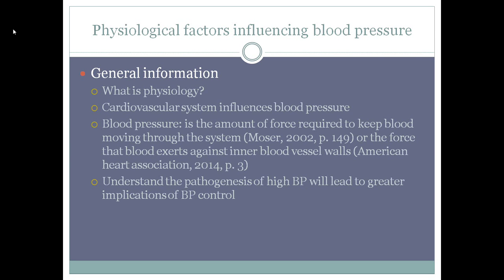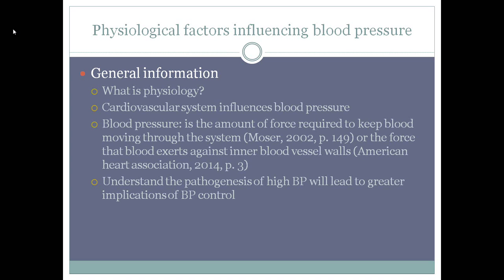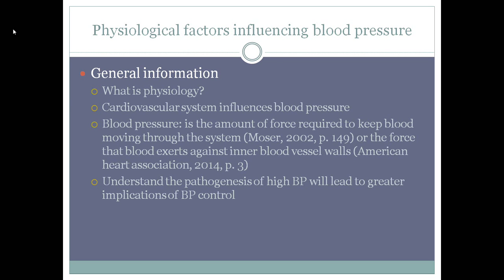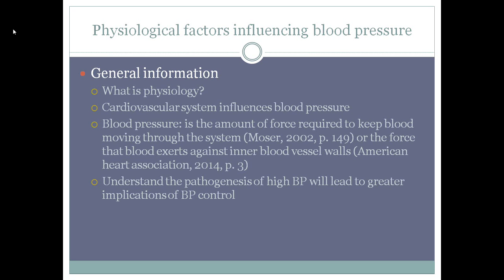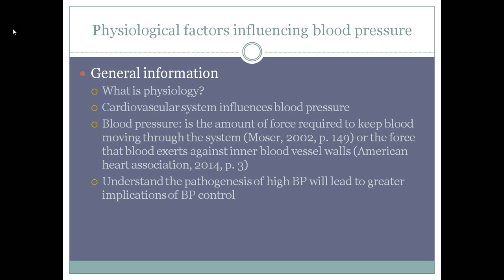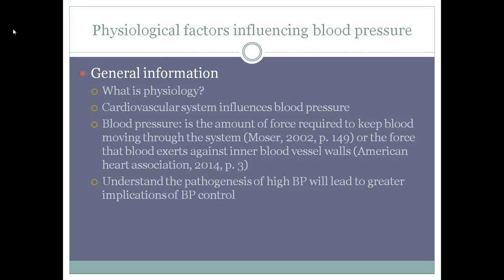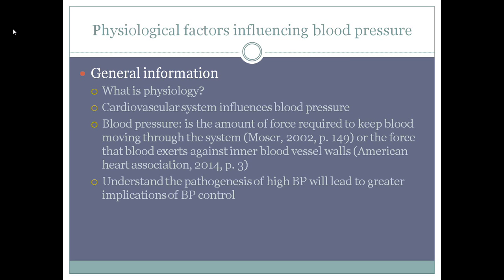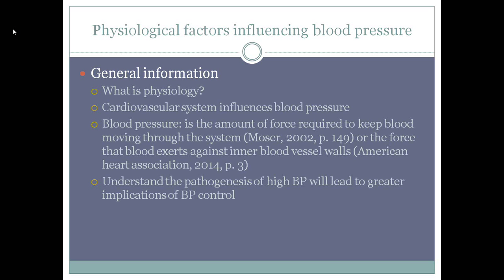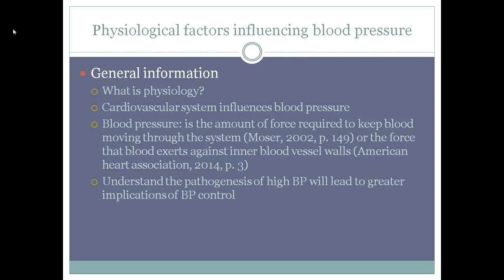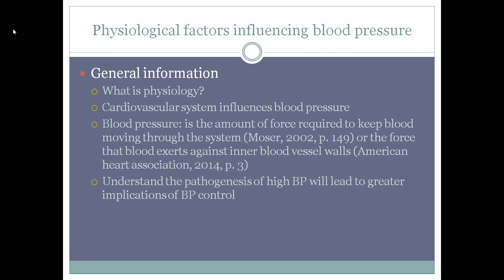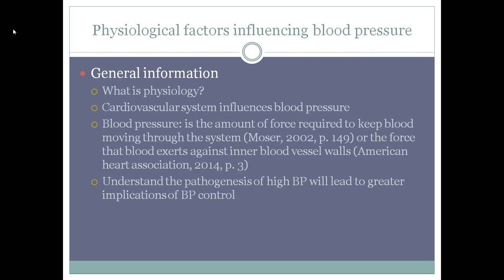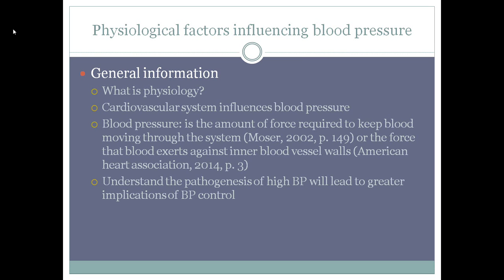Fresh oxygenated blood is forced out of the left ventricle into the aorta, which is then branched into arteries and arterioles. Once oxygen is used up, the blood returns to the heart by the veins. In order for the blood to keep moving through the system, a certain amount of force is required — blood pressure is the term used to refer to that force. The American Heart Association defines blood pressure as the force that blood exerts against inner blood vessel walls. A greater understanding of the pathogenesis of high blood pressure will lead to greater implications for blood pressure control through targeted therapies that reduce morbidity.